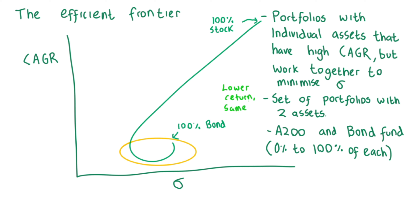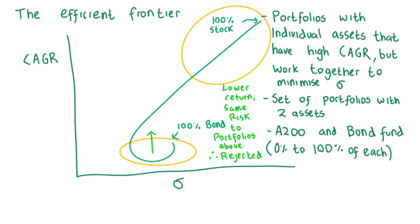At the bottom of the curve, we have a relatively high amount of risk for the least return compared to other combinations that lay higher on the curve, so we would reject this combination of asset allocation. Why? Because if we can achieve greater expected returns in the other portfolios for the same risk, then we would consider the lower return portfolios as inferior. Moving to the top right of the curve, we have the highest expected rewards but for correspondingly large risk, with the 100% stock, 0% bond portfolio, which slowly scales down as we move down the curve.